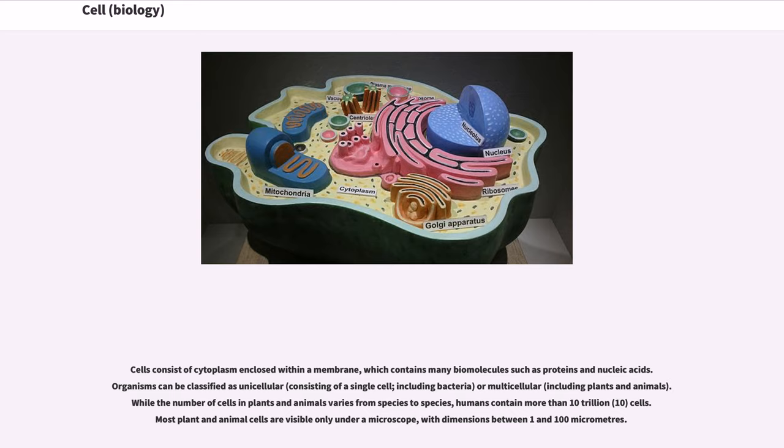While the number of cells in plants and animals varies from species to species, humans contain more than 10 trillion cells. Most plant and animal cells are visible only under a microscope, with dimensions between 1 and 100 micrometers.